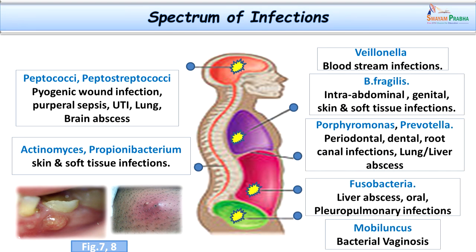Gram-negative non-sporing anaerobic bacilli form the major chunk of clinical infections. Bacteroides fragilis can cause intra-abdominal, genital, and soft tissue infections. Porphyromonas and Prevotella are basically involved in oral and dental root canal infections, and can also cause bloodstream infections, lung and liver abscesses. Fusobacteria can cause liver abscess, lung abscess, oral abscess, and pleuropulmonary infections. Mobiluncus — known as Döderlein's bacillus — is involved in bacterial vaginosis along with Gardnerella, and causes typical clue cells.